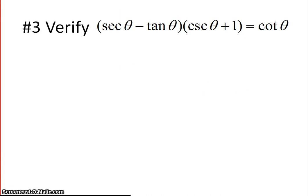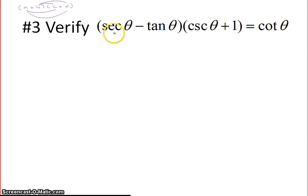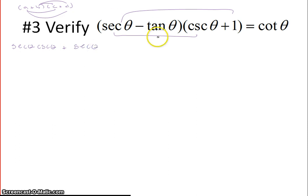Problem number 3. This problem is screaming to use the FOIL method or box method to multiply it out. Similar to algebra: if you have (a + b)(c + d), you multiply the first, the outer, the inner, and the last. So we have secant theta times cosecant theta as the first, plus 1 times secant theta as the outer, minus tangent theta times cosecant theta as the inner, and 1 times negative tangent — so minus tangent of theta — as the last. We want all of that to equal cotangent.